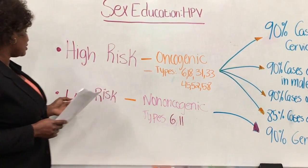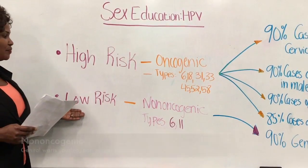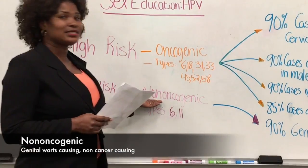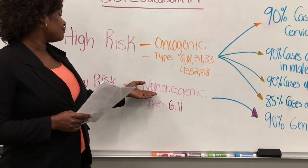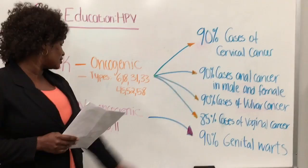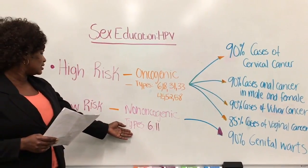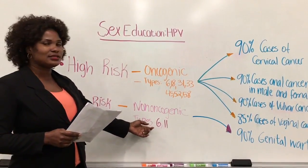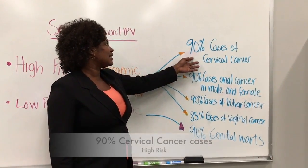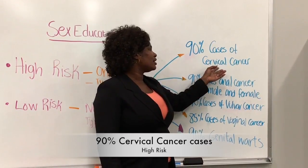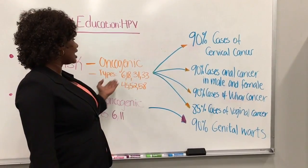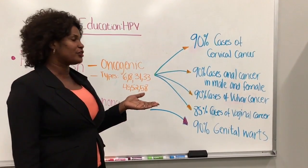The low-risk types are non-oncogenic, which means they are not cancer-causing. The low-risk types are 6 and 11. If you look at this slide, you can see that 90% of cases of cervical cancers are caused by the high-risk types of HPV, as already mentioned.